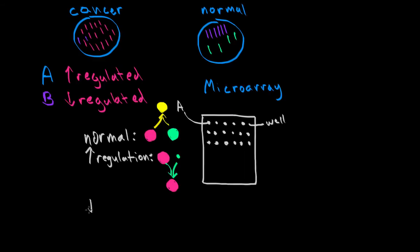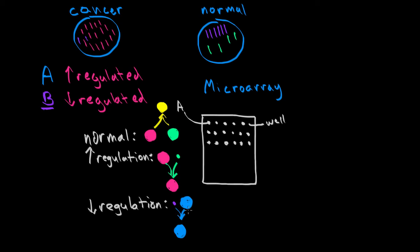The opposite is true for downregulation. When a gene is downregulated — here, gene B — there is a lot more mRNA in the normal cell than in the cancer cell. We have just a little fluorescence from the cancer cell and a lot more from the normal cell. When these two combine, they form a blue dot. The computer sees a blue dot, meaning there is more mRNA in the normal cell than in the cancer cell, indicating downregulation of the gene.